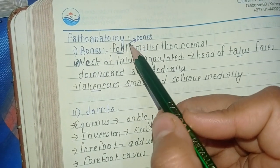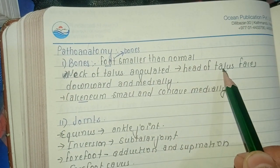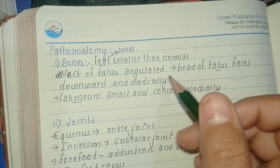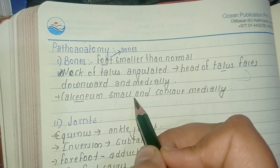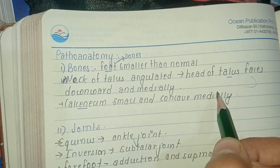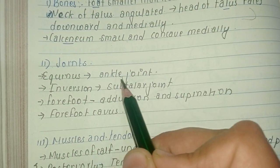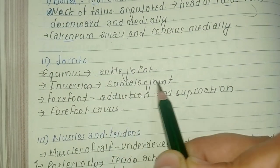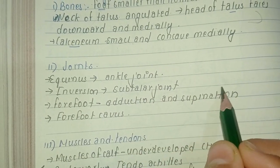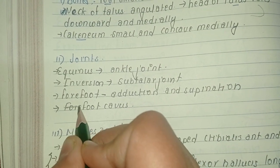Regarding patho-anatomy, the foot bones are smaller than normal. The neck of the talus is angulated and the head of the talus faces downward and medially. The calcaneum is small and concave medially. At the joints: there is equinus at the ankle joint, inversion at the subtalar joint, the forefoot is fixed in adduction and supination, and there is cavus in the mid foot.